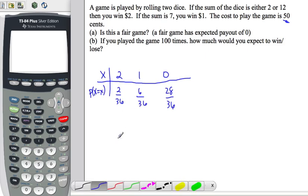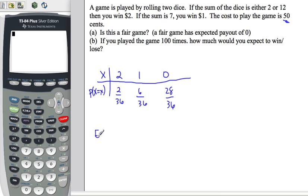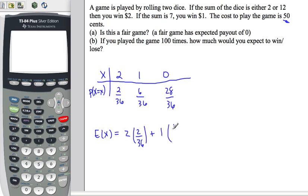Now we find the expected value, which is just multiplying each outcome by its probability. We're going to have $2 two out of 36 times, $1 six out of 36 times, and $0 twenty-eight out of 36 times. The probability rules you were taught still apply here — it's just ands and ors again.